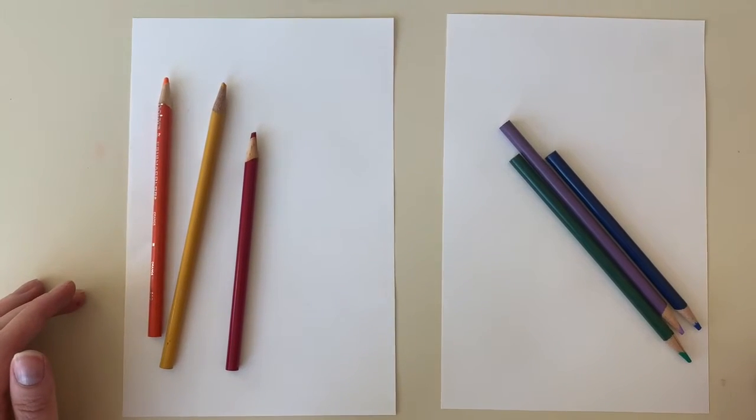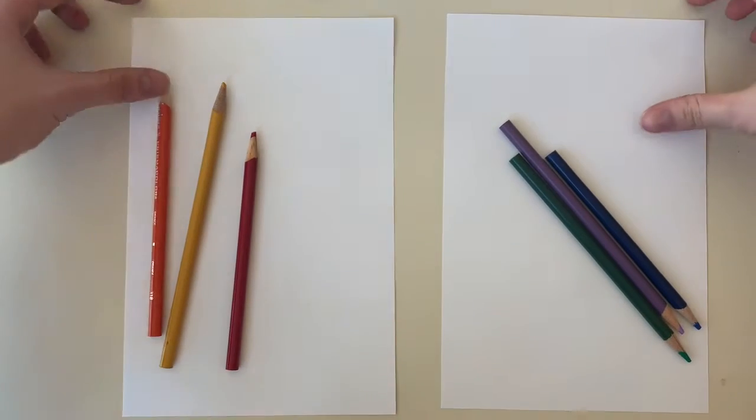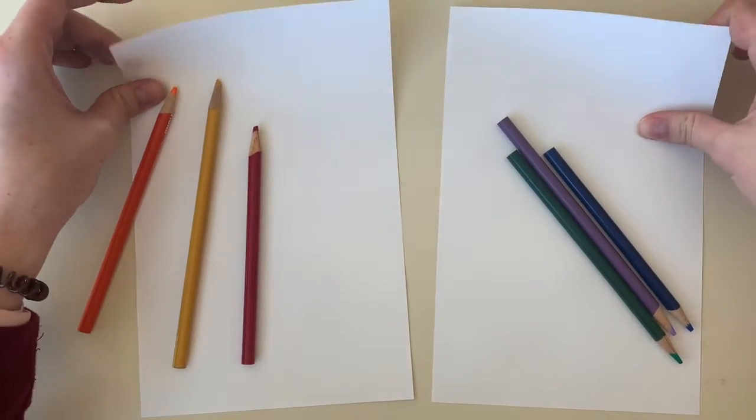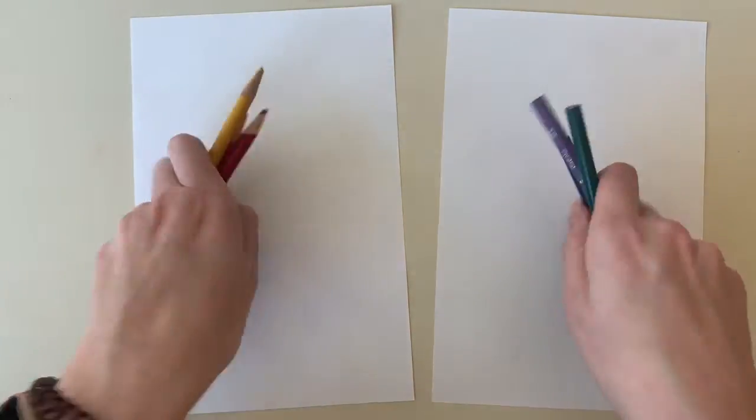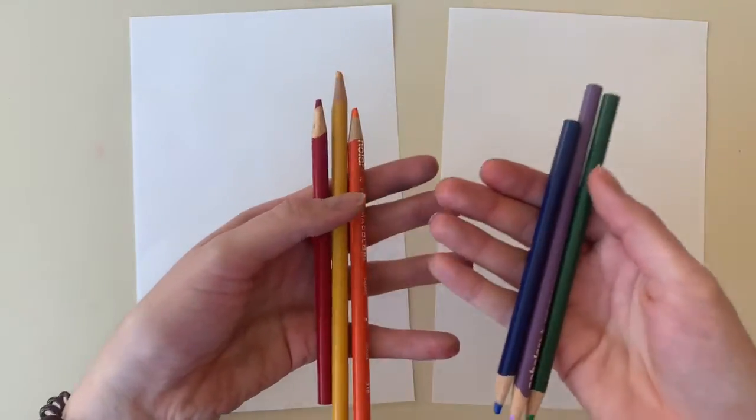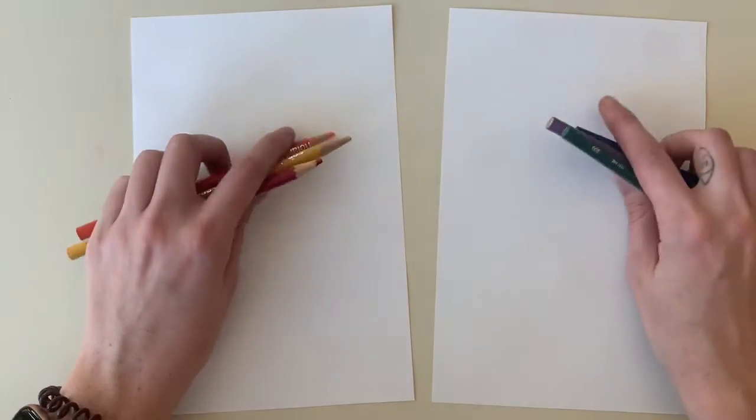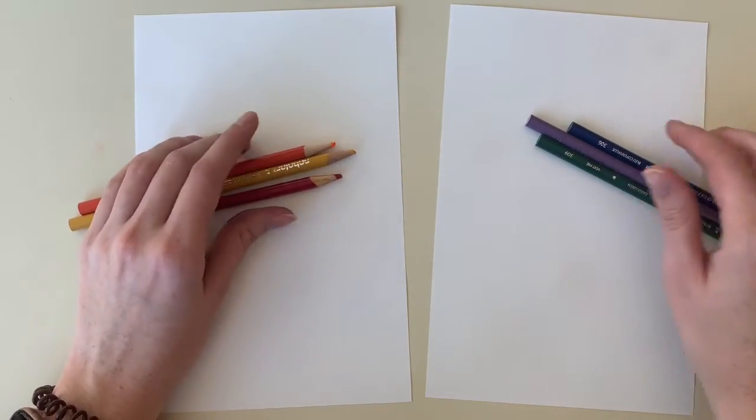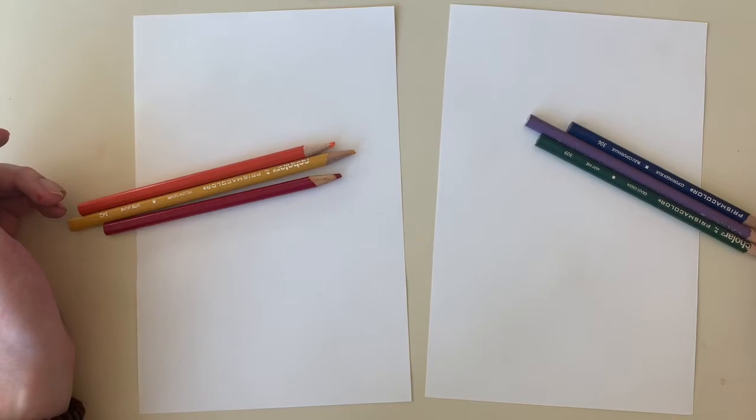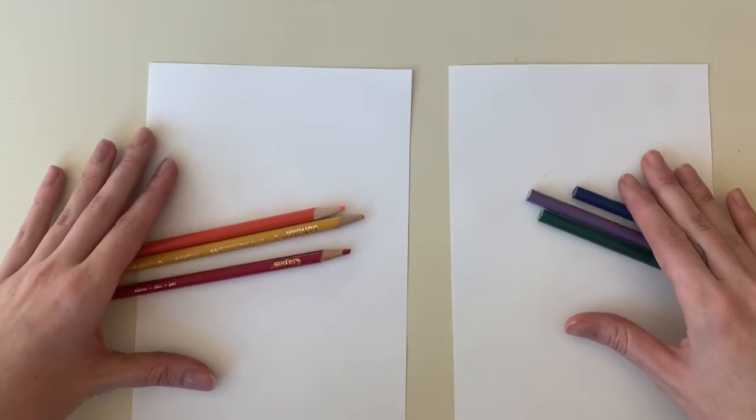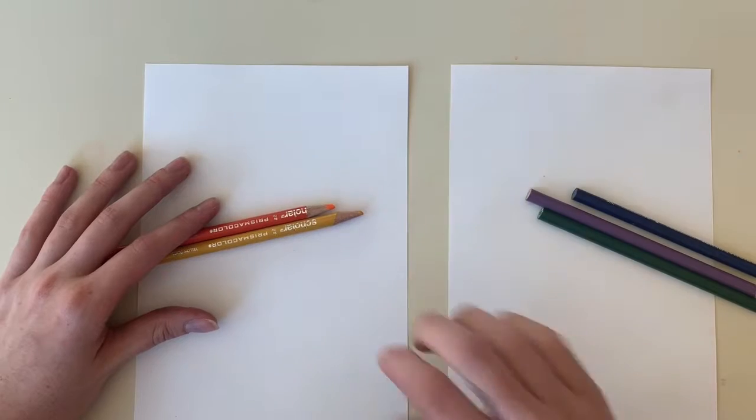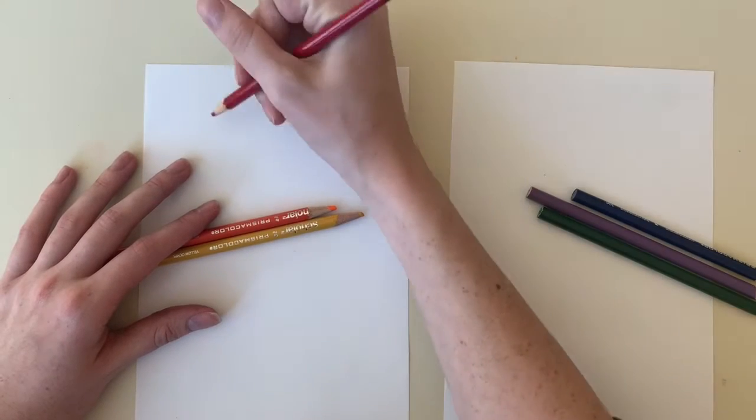Hello class, today we are going to be learning about warm and cool colors. We're going to need two sheets of paper and something to color with. If you only have one sheet of paper, that is perfectly fine, just cut it in half.